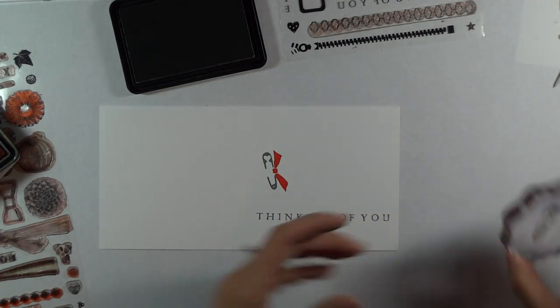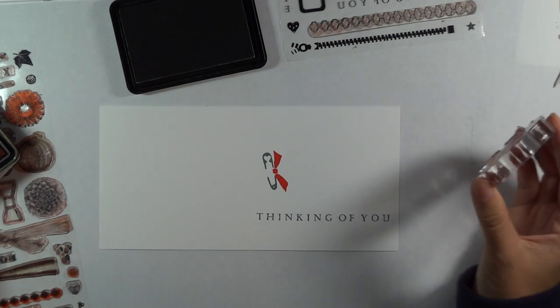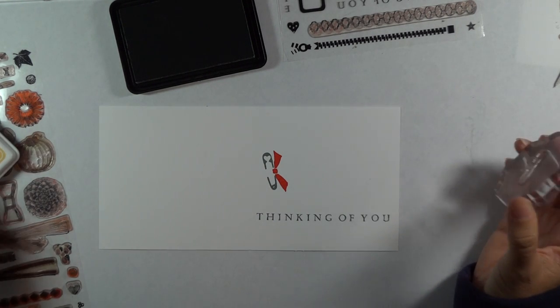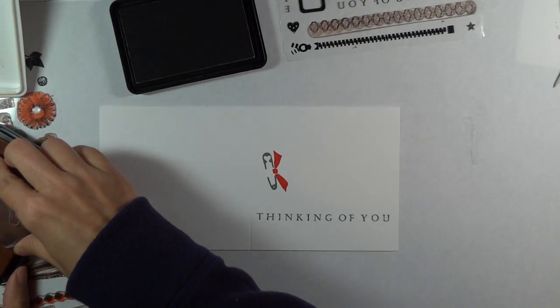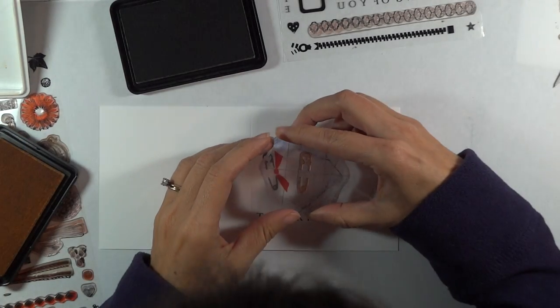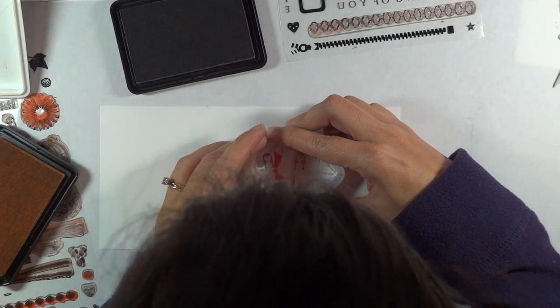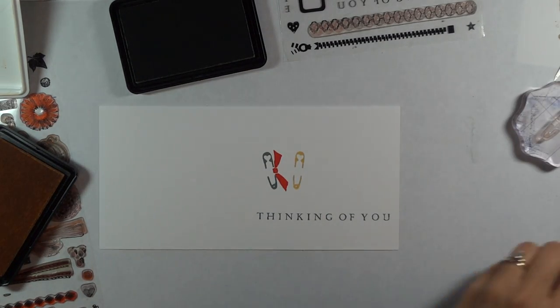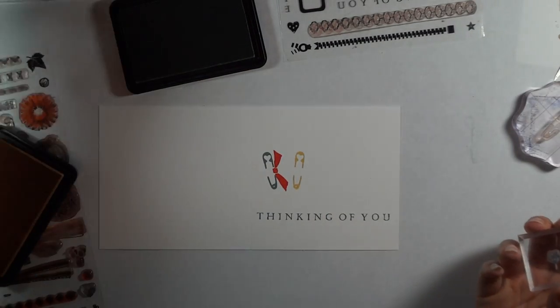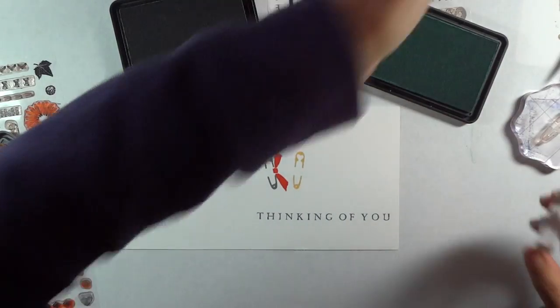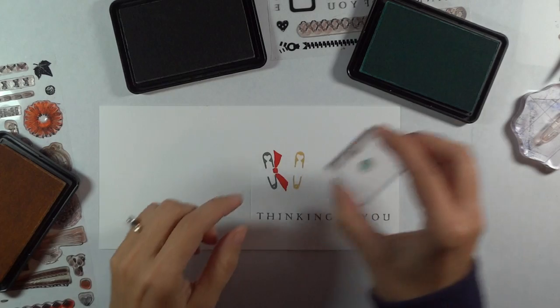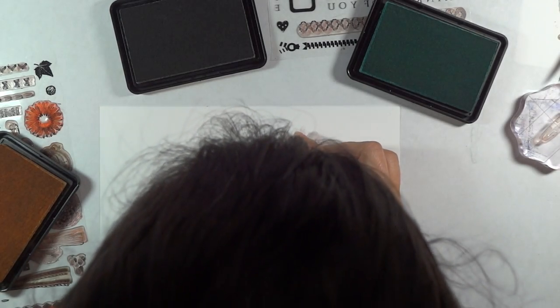And then I'm going to stamp this off, and I want to use a different color. This time I'm going to use, I think, the yellow. And I'm going to go at an angle, put it right here. And then I'm going to take this turquoise pad and put the little star on there.